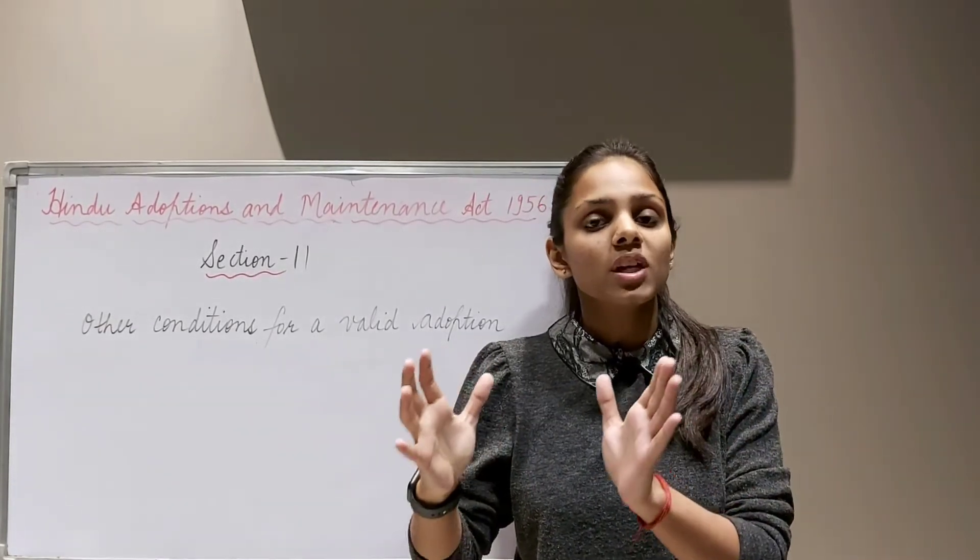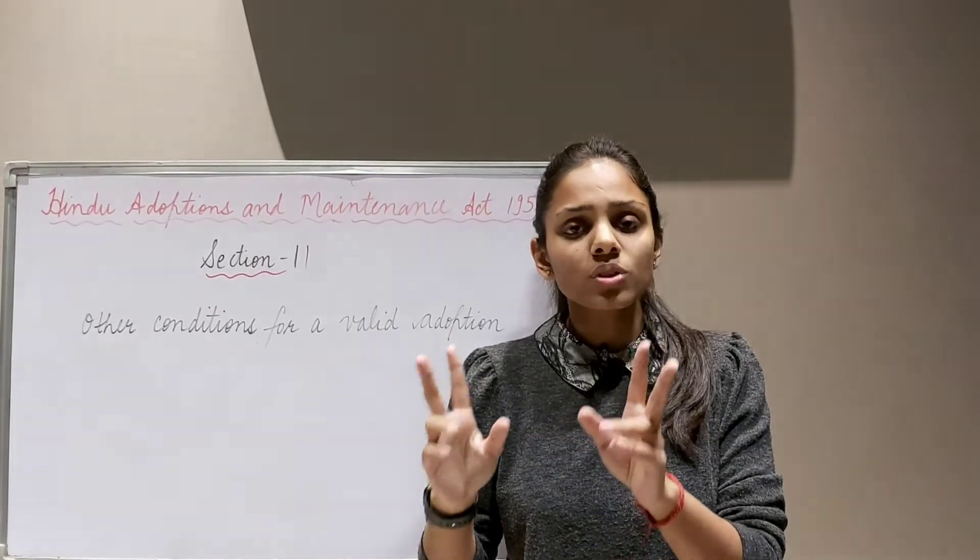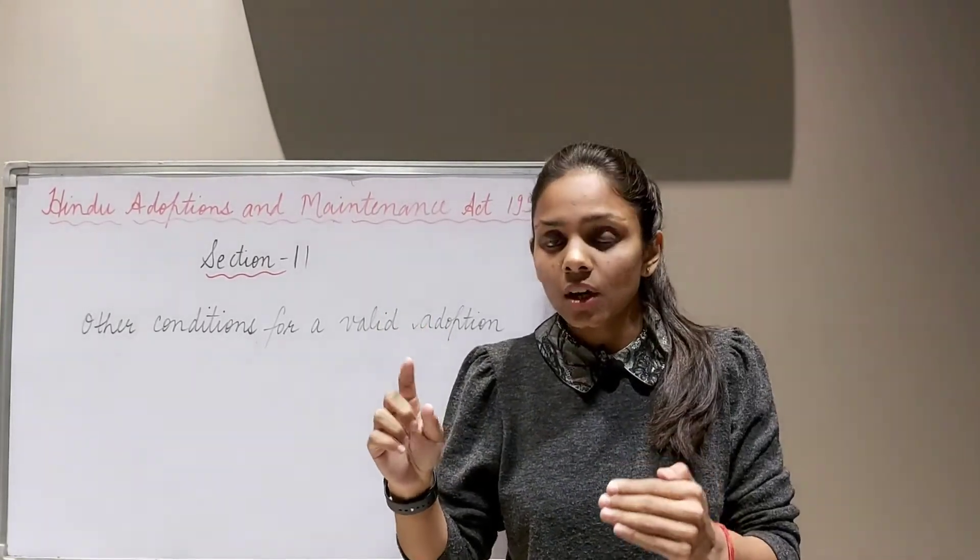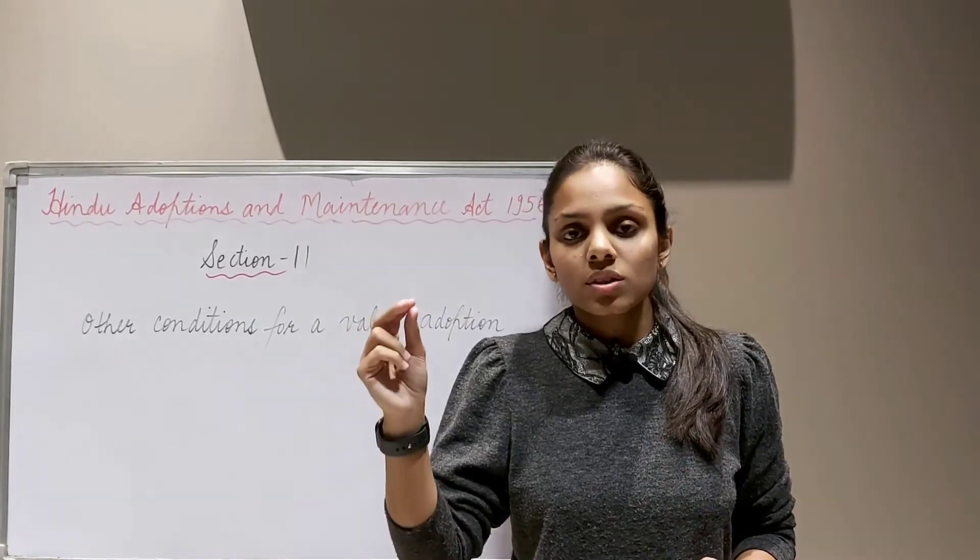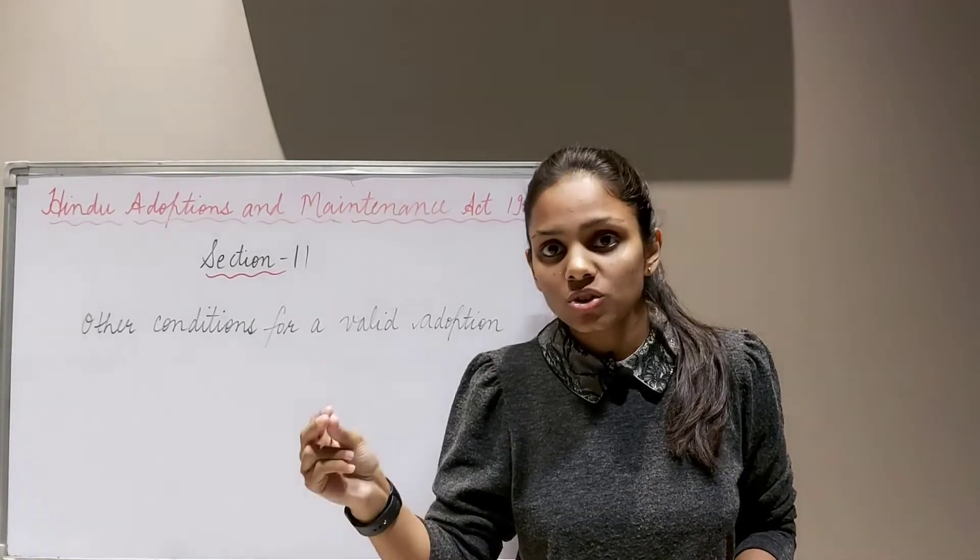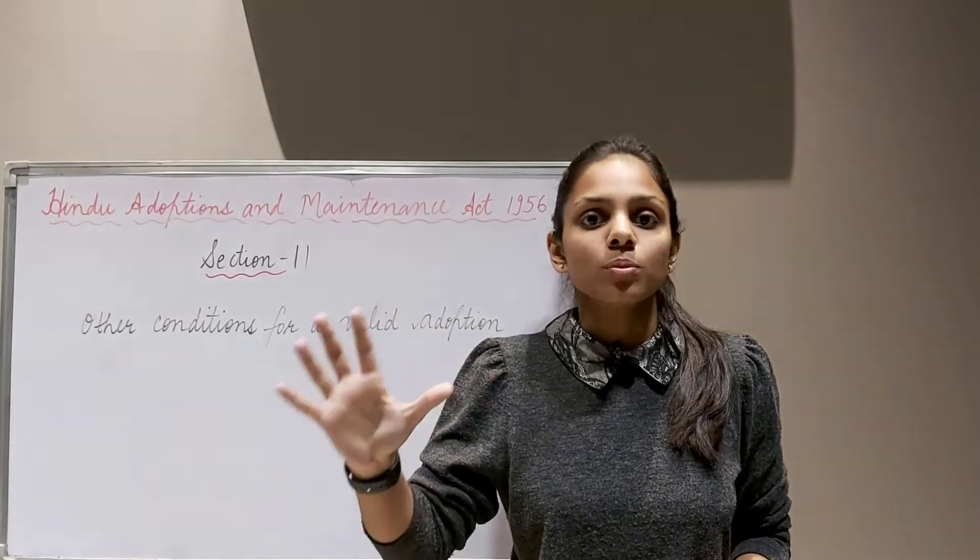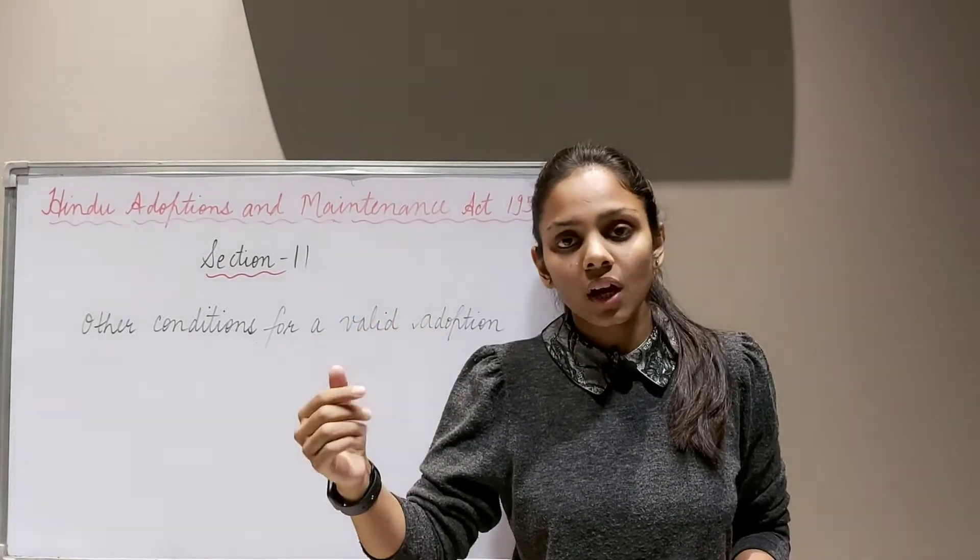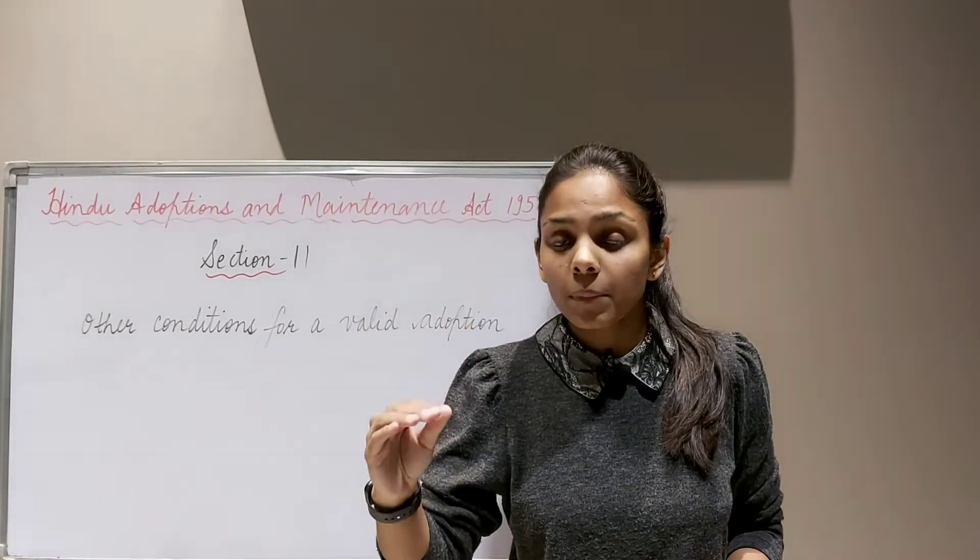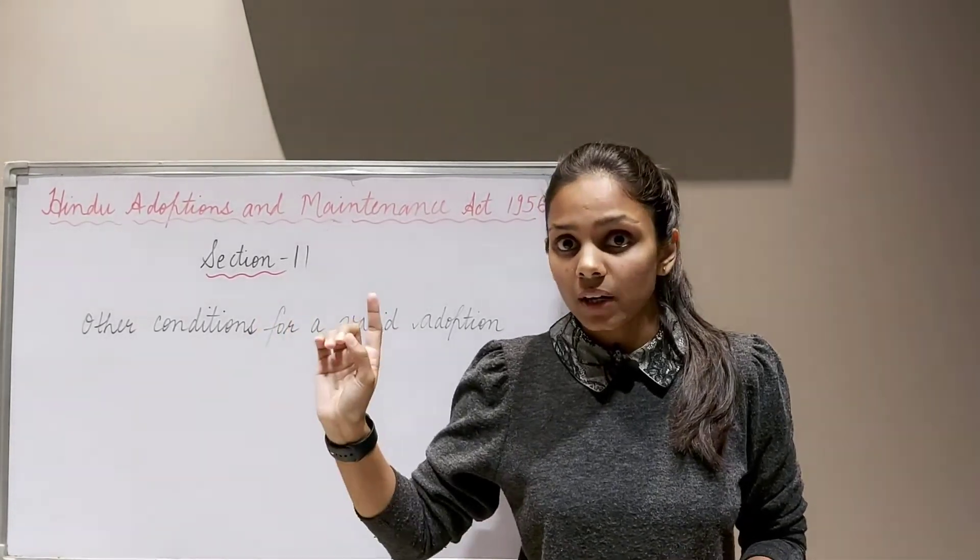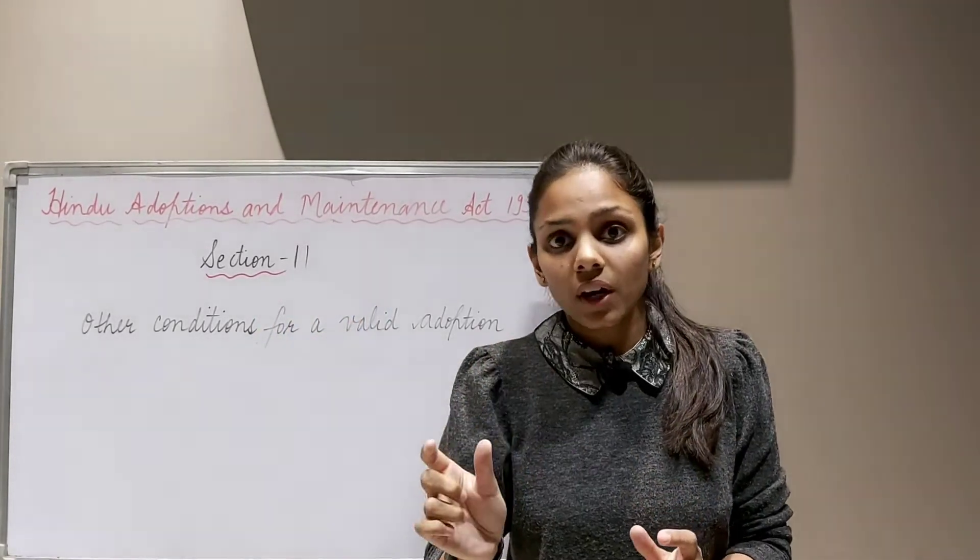Two male persons or two female persons cannot adopt a child at the same time. A child once adopted cannot be further given in adoption, which we discussed in section 10. Section 11 clause 6 talks about ceremonies of adoption. There are two ceremonies: actual giving and taking, and Datta Homam. Section 11 states that Datta Homam ceremony is not an essential requisite for an adoption to be valid.